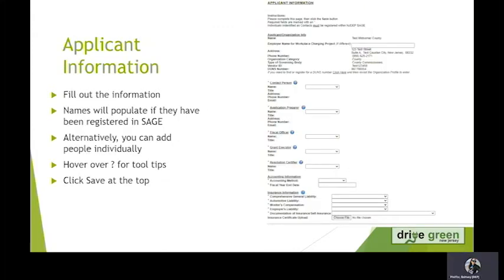On the Applicant Information page, we need you to enter all of the requested information. This is where you will choose drop-downs for people and the roles that you have them. That's why they need to be registered in SAGE, so that they populate in the drop-down. If you have any questions about what these roles are responsible for, there are tooltips in the blue question marks next to the name. You can hover over the tooltip and it will give you a description of what that person's responsibilities will be.